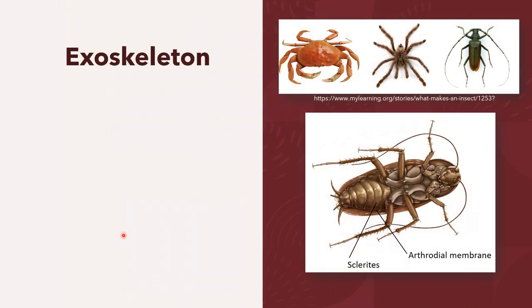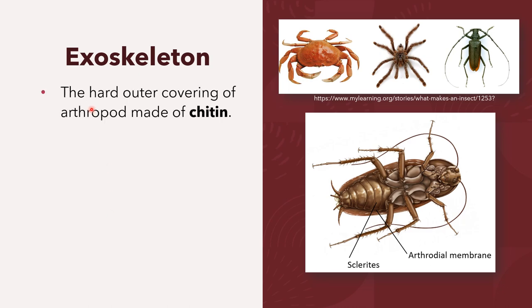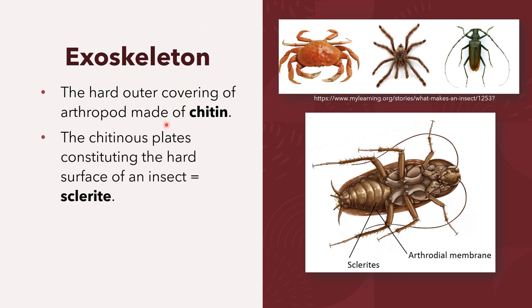An important characteristic of the arthropod is the presence of the exoskeleton. The exoskeleton is the hard outer covering of the arthropod made of chitin. It covers the external surface of the body, and it is also defined as an external jointed skeleton which encloses the arthropods. The term for the chitinous plates constituting the hard surface of the insect or the arthropod is known as the sclerite.